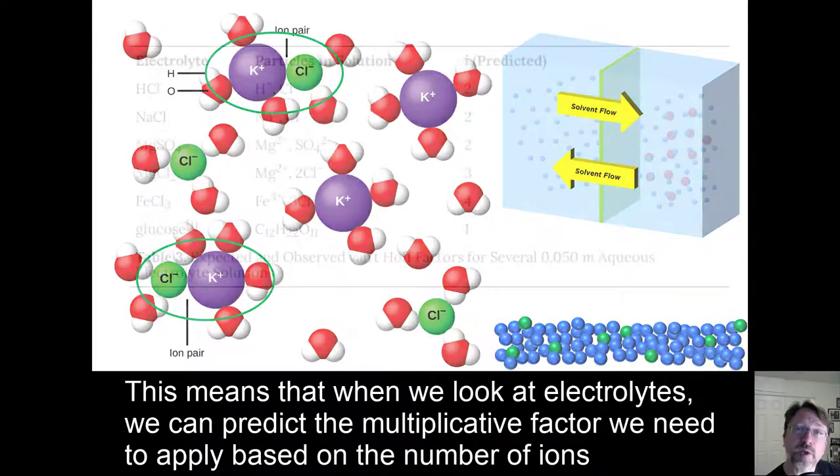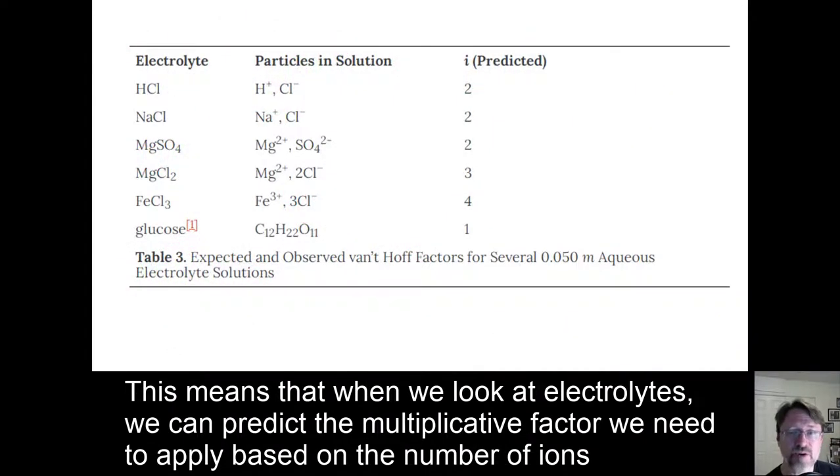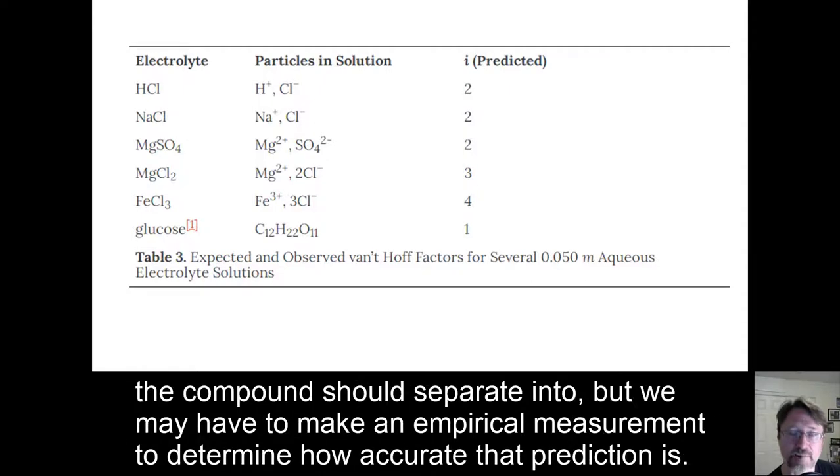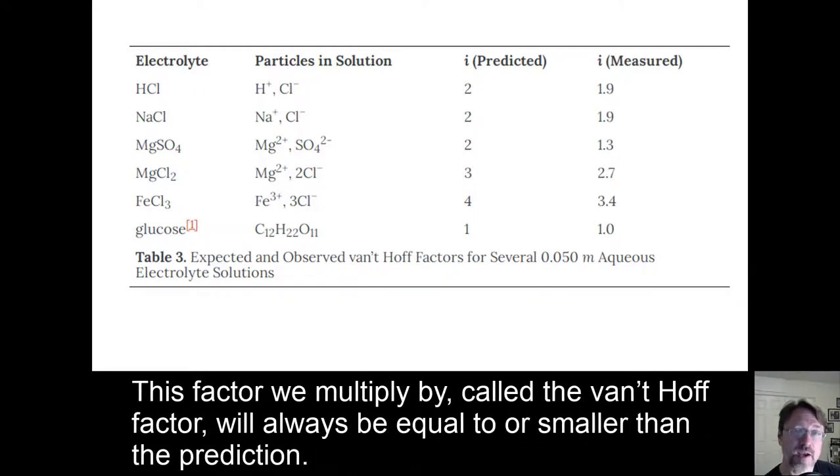This means that when we look at an electrolyte, we can predict the multiplicative factor we need to apply based on the number of ions the compound should separate into, but we may have to make an empirical measurement to determine how accurate that prediction is.